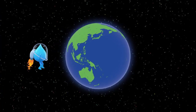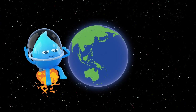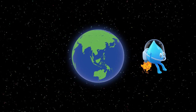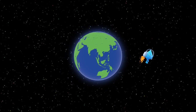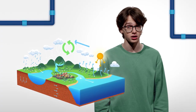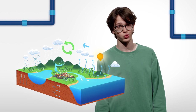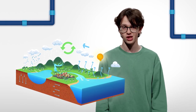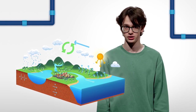Water is in the atmosphere, on the land, in the ocean and underground. It moves from place to place through the water cycle, but our natural water cycle is changing as climate changes.